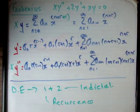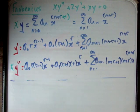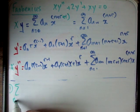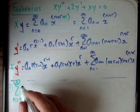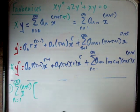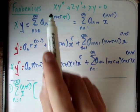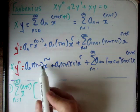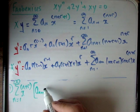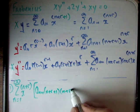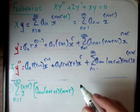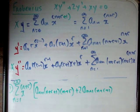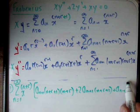Equation 1, the recurrence relation, is: sum from n = 1 to infinity of x^(n+r) times [a_(n+1)·(n+r+1)·(n+r) + 2·a_(n+1)·(n+r+1) + a_(n−1)] = 0.